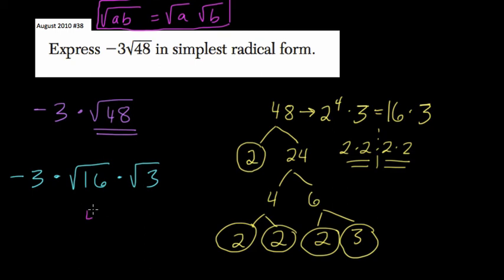The square root of 16 is just 4. So now we have negative 3 times 4 times the square root of 3. And that's negative 12 times the square root of 3, which is written like this. And that's what we get. All right, hope this helped.